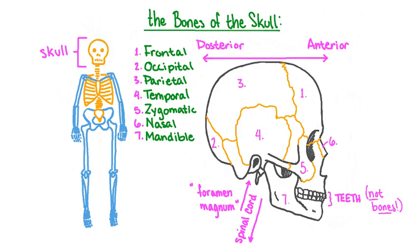The skull can also be divided into an anterior and a posterior portion. Posterior is a word that means rear or behind, and anterior means front or forward. The term posterior skull typically refers to the bones of the cranium, and anterior skull typically refers to the facial bones and mandible.